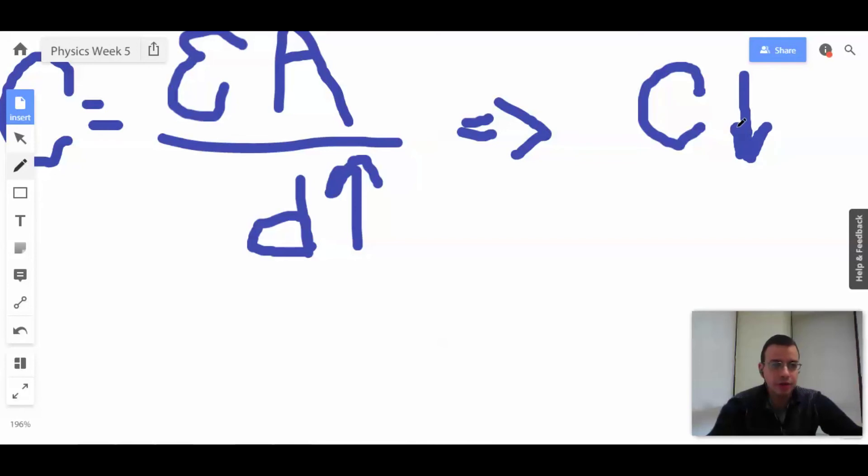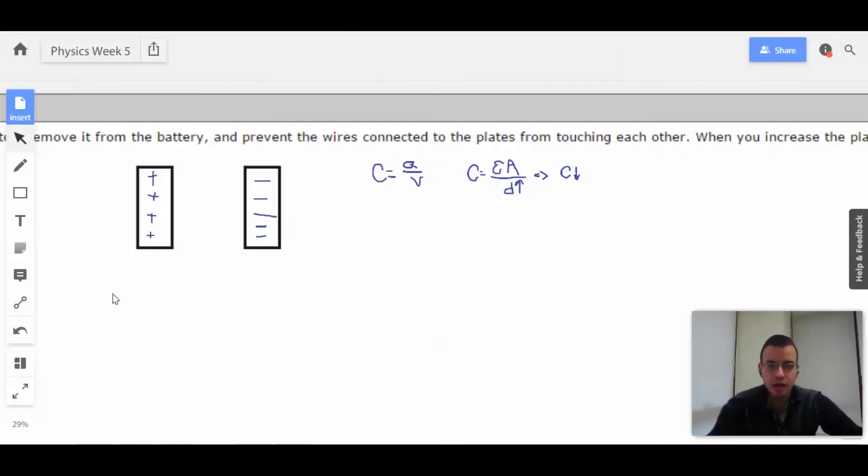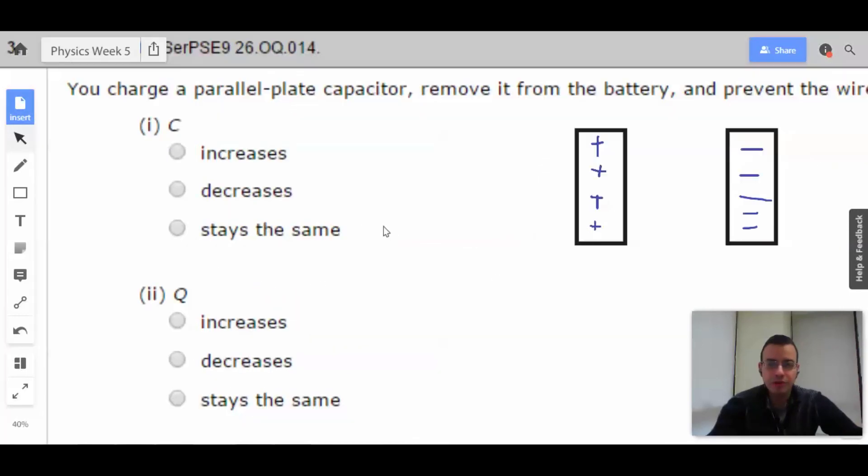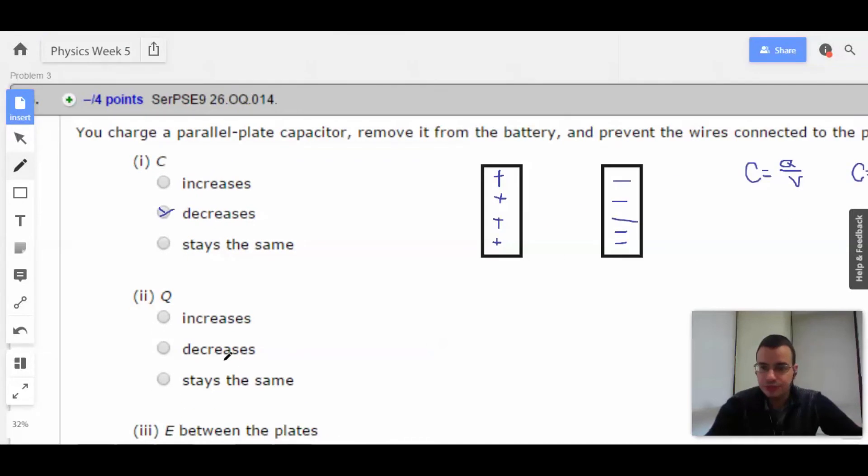Capacitance will go down. Because when you get a bigger number on bottom, you get a smaller number overall. I'm going to go with that. So, decreases.